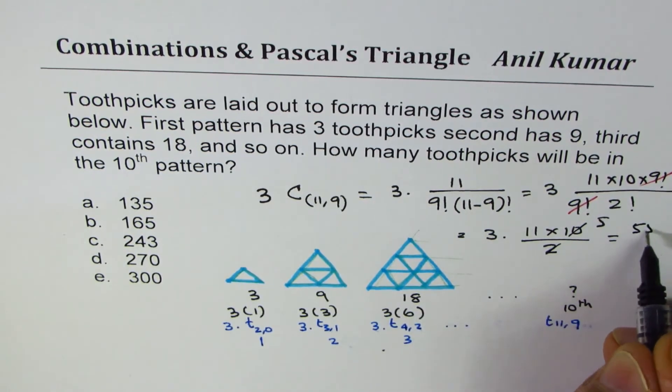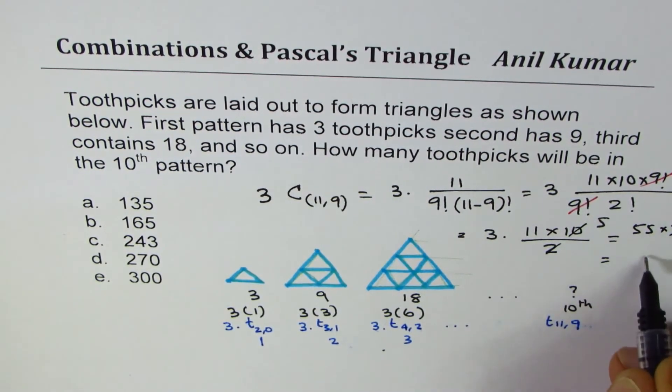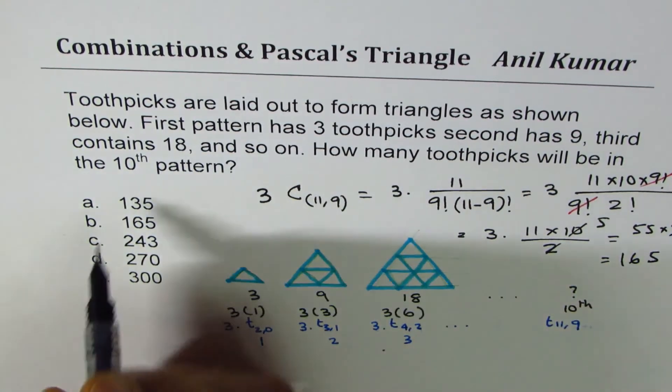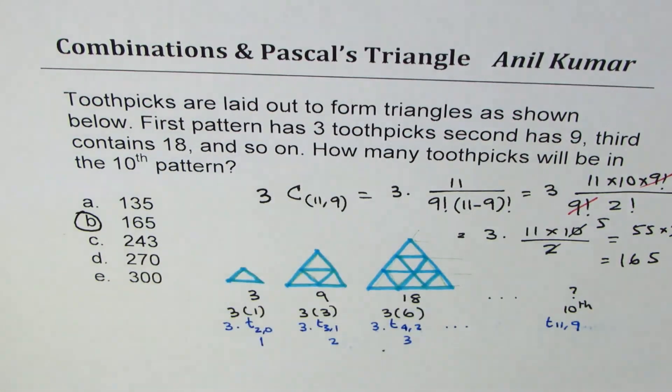You can always use calculator or just divide. So it becomes 55 times 3, right? So 55 times 3, which is 3 times 5, 15, 1, 165. So option B is the correct option for us.